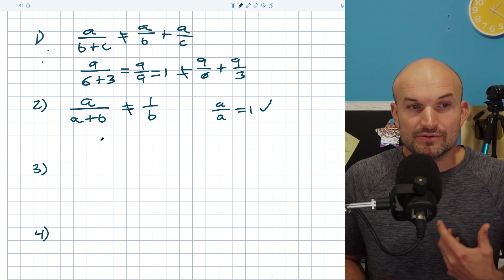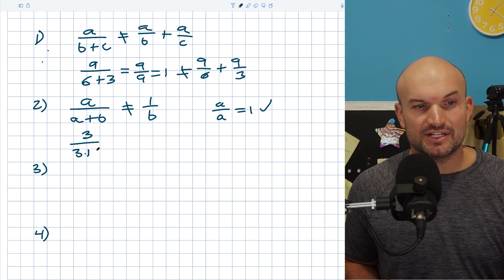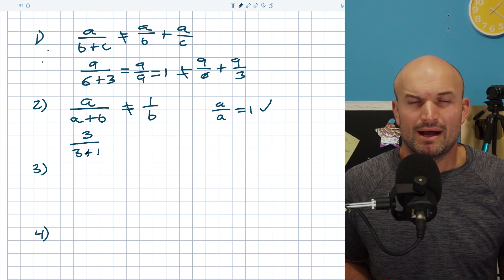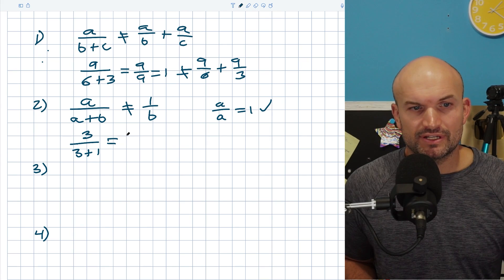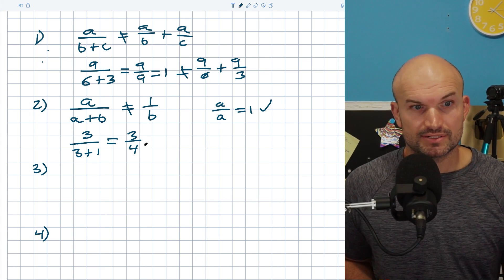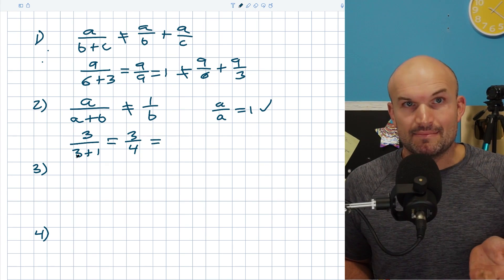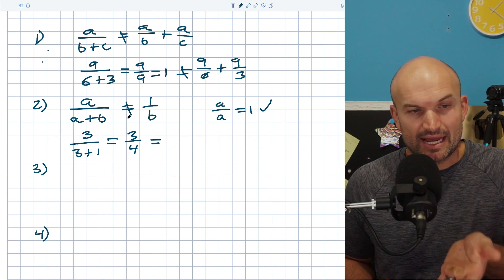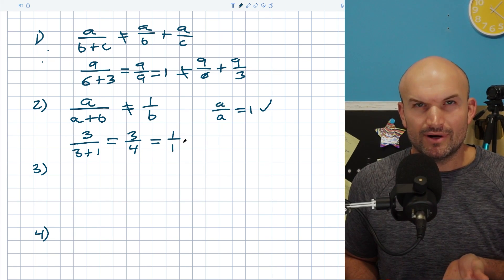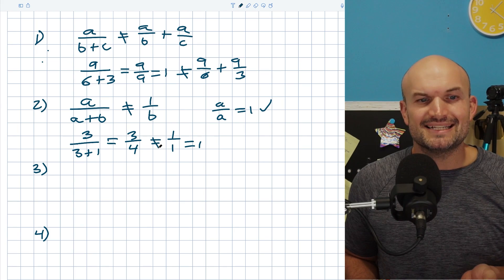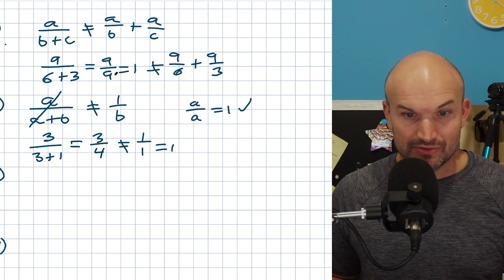Let's use numbers to make sense of this. If I had three divided by three plus one, we add the denominator: three plus one equals four, so the answer is three fourths. However, if you follow the incorrect logic and divide out the threes, you get one over one, which equals one — and that is definitely not three fourths. So please do not divide out terms like this when they are part of a sum or difference in the denominator.